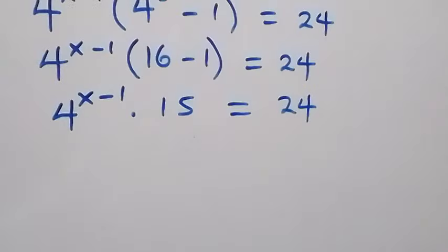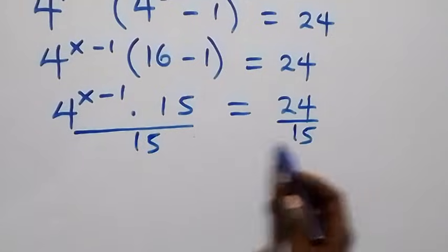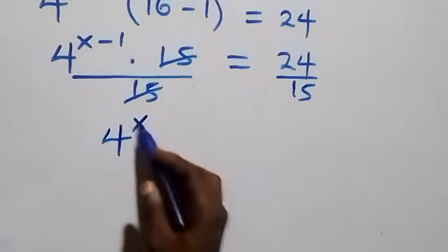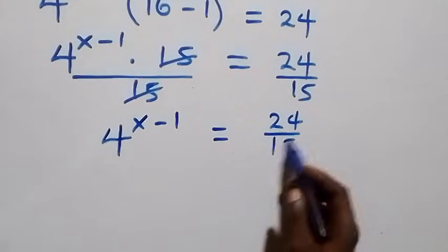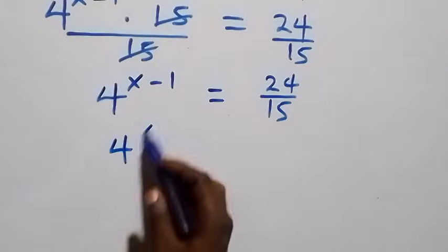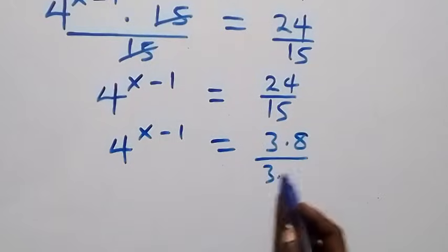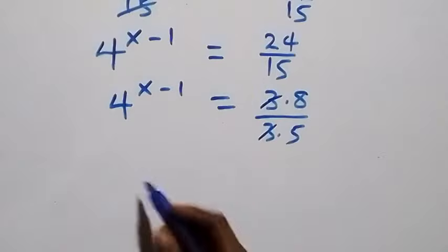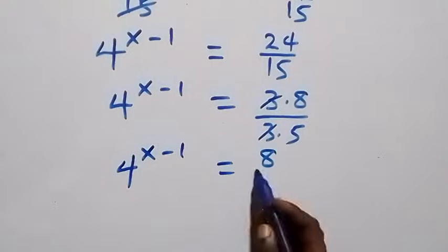And next step, we divide both sides by 15. That is, divide this side by 15, also divide the other side by 15 — the 15s cancel each other. And then we have 4 raised to power x minus 1, which equals to 24 over 15. This can also be written as 4 raised to power x minus 1 equals 3 times 8 over 3 times 5 — the 3s cancel each other — and we have 4 raised to power x minus 1 equals 8 over 5.